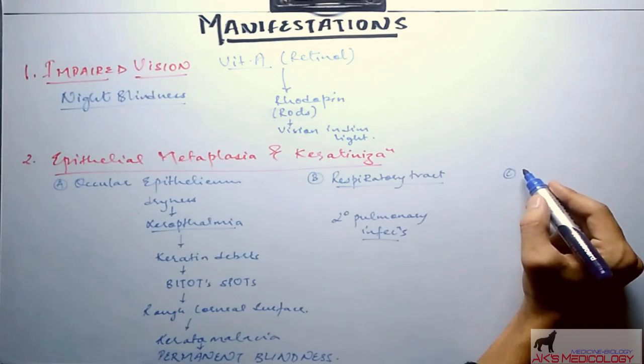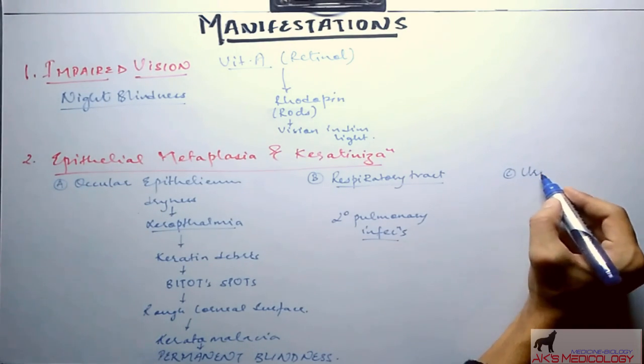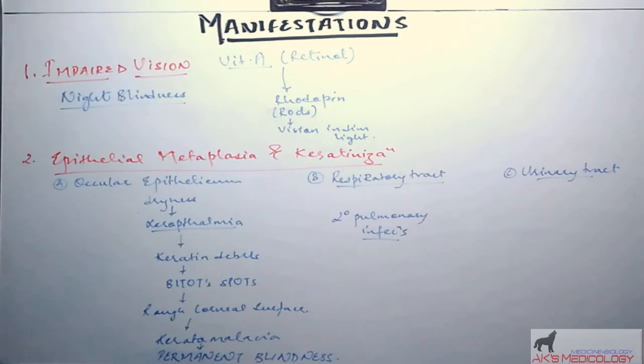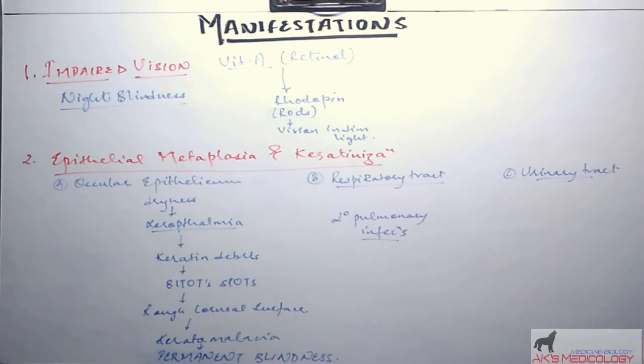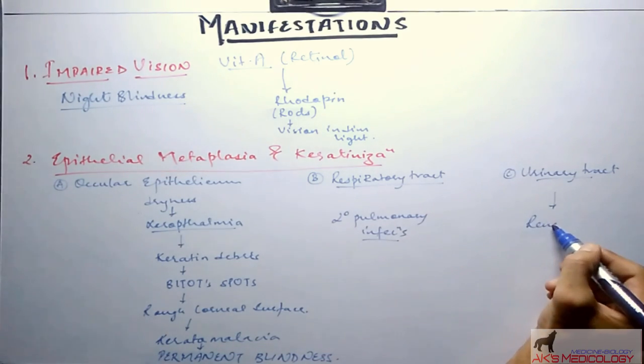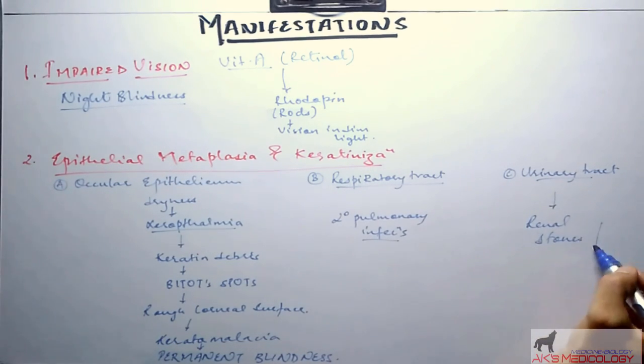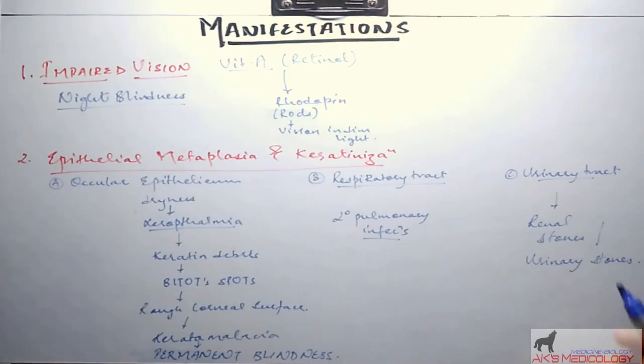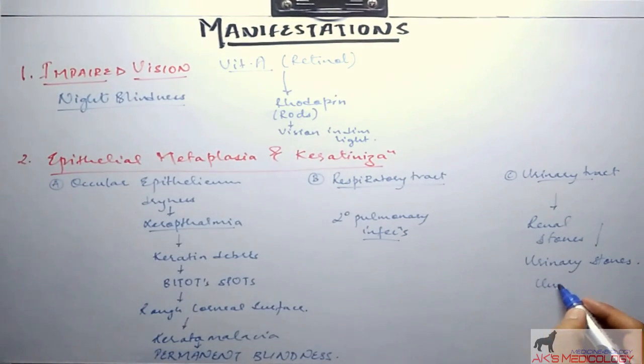Third epithelium which is affected is the urinary tract. Desquamation or loss of squamous tissue and deposition of keratin debris leads to the formation of renal stones present in the urinary tract. These keratin debris may also form stones in the urinary bladder.